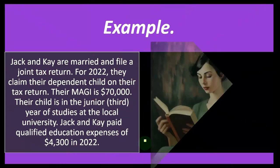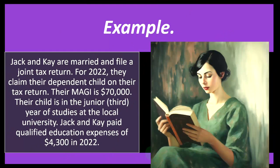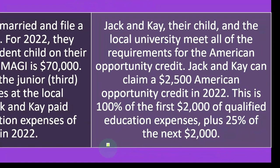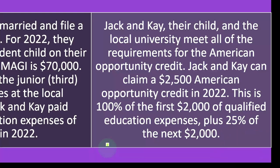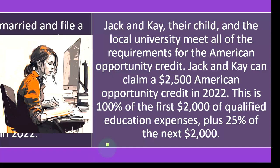Let's look at an example. Jack and Kay are married and file a joint tax return. For 2022, they claim their dependent child on their return. Their MAGI — modified adjusted gross income — is $70,000. Their child is in the third year of studies at the local university. Jack and Kay paid qualified education expenses of $4,300 in 2022, and their child and the local university met all requirements for the American Opportunity Credit. Jack and Kay can claim a $2,500 American Opportunity Credit in 2022.